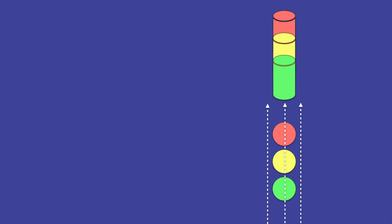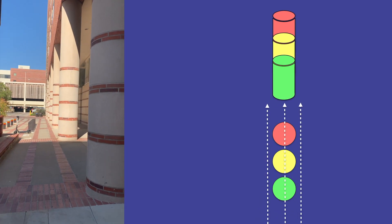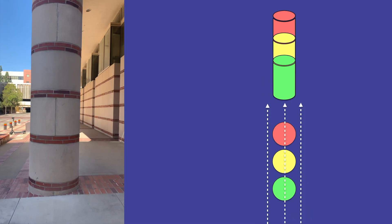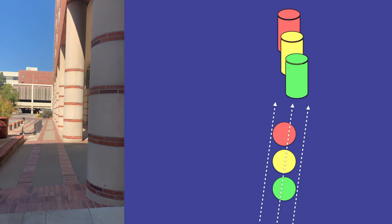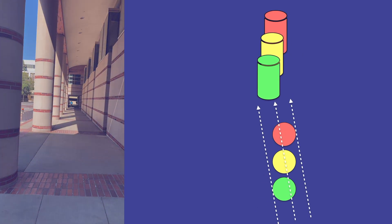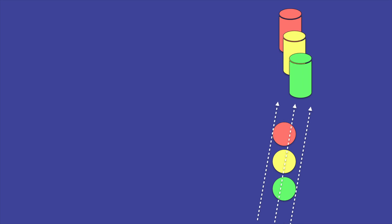To demonstrate this principle, consider that you are standing in front of a row of columns. When you view these columns straight on, you only view one column. However, if you were to move to the left or to the right, you would separate out the columns. Note that the columns that are furthest away from you seem to move with you as you move to the left or to the right, while the columns closest to you seem to move away from you.